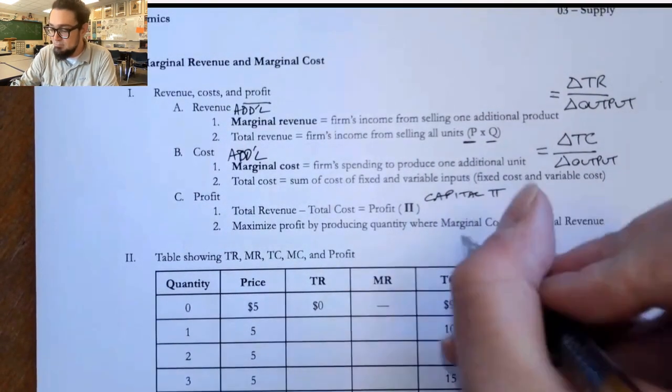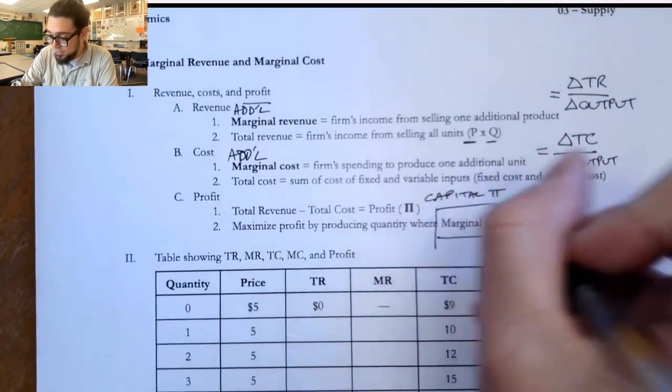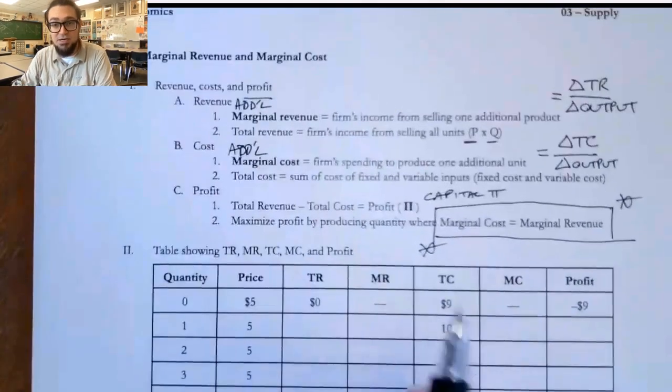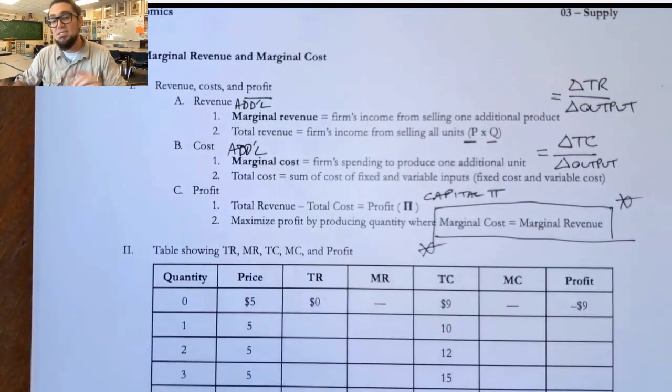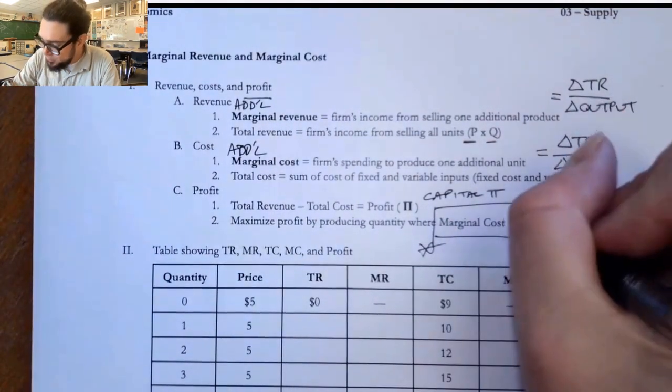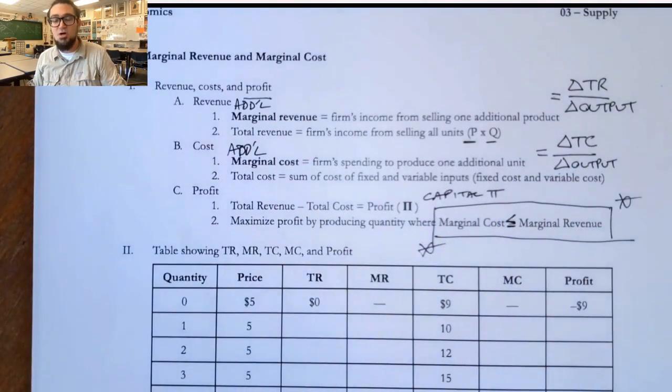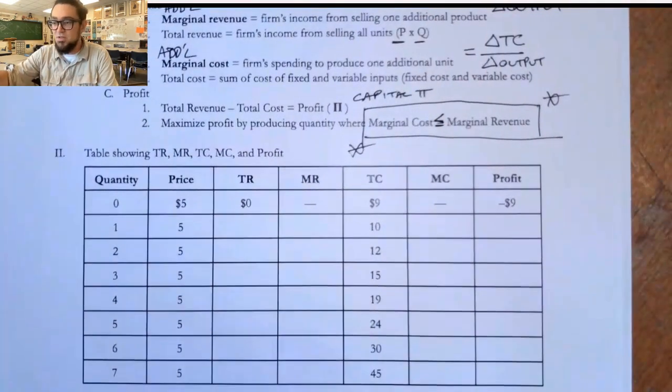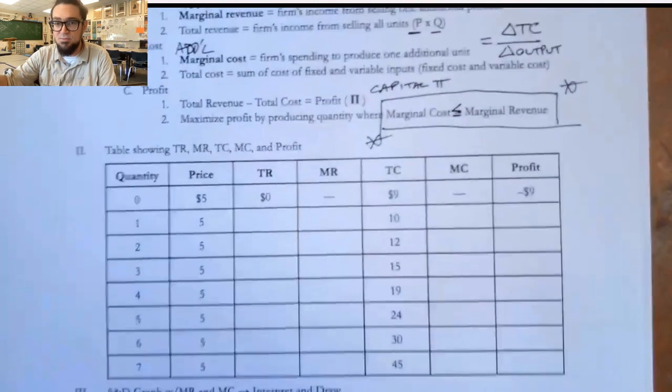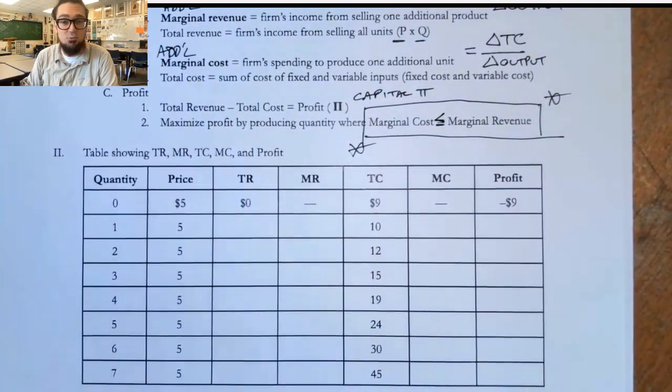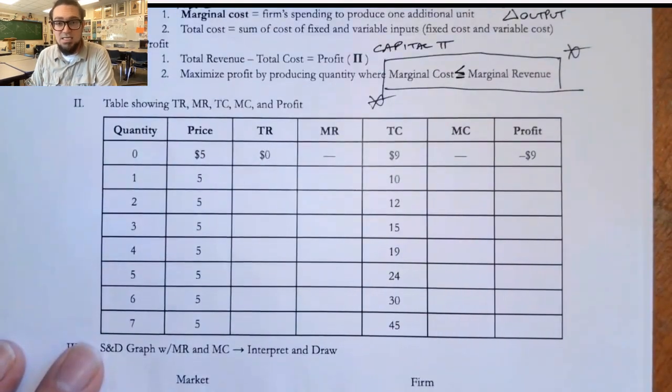And what we're going to find is the most important rule in all of microeconomics. And I'm putting a box around it: the quantity where marginal cost equals marginal revenue, or as close as you can get, where marginal revenue is still greater than or equal to marginal cost. That is what we call the profit maximizing quantity of output. And we're going to find that here when we do this data table.